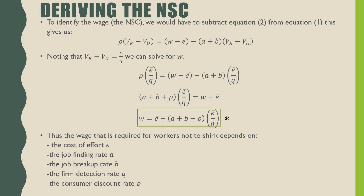To identify the wage for the no shirking condition, we subtract equation 2 from equation 1, which gives us the following relation. Noting that the difference between these two values is equal to E-bar over Q, we can solve for W. With a little bit of algebra, we find that our no shirking condition is equal to E-bar plus A plus B plus rho times E-bar over Q. We see from this equation that the wage required for workers not to shirk depends on the cost of effort E-bar, the job finding rate, the job breakup rate, the firm detection rate, and the consumer's discount rate.